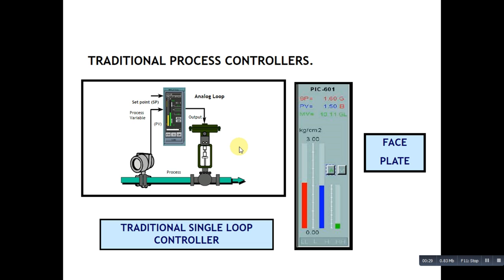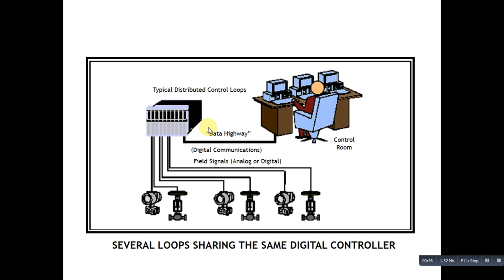A traditional single loop controller handles one control loop, but if you have 700 control loops, you would need to install various other controllers at huge cost. But thanks to microprocessor-based systems and the invention of digital controllers, we are able to connect several sensors and final control elements with just one digital controller.